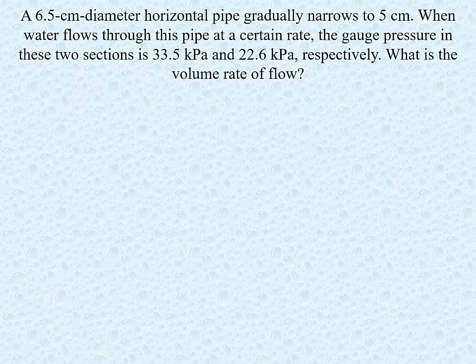We have a 6.5 centimeter diameter horizontal pipe gradually narrows to 5 centimeters. When water flows through this pipe at a certain rate, the gauge pressure in the two sections is 33.5 kilopascals and 22.6 kilopascals respectively. What is the volume flow rate? Well, remember the volume flow rate is the a1v1 that we were just looking at previously. So we need to start by looking at the equation of continuity to relate the volume flow of water at the two locations.